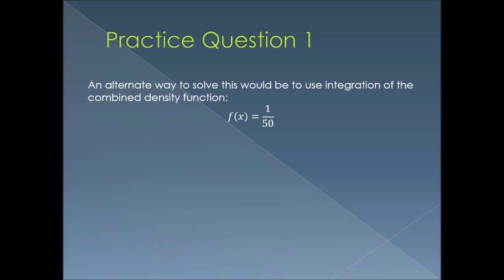Another way to solve this is through integration. We take the combined density function 1/50 and perform a double integration with respect to Jones and Smith. Jones must live longer than Smith, so his time of death ranges from S to 10, giving (10 minus S)/50. Smith dies anywhere between 0 and 5. Integrating that expression over Smith's range gives the final answer of 0.75.